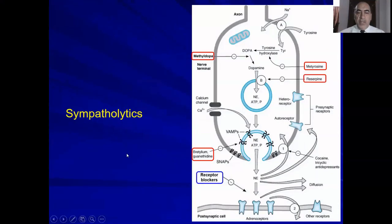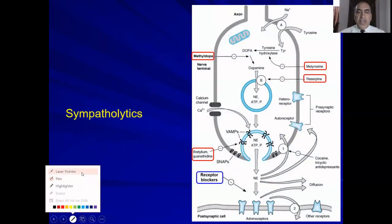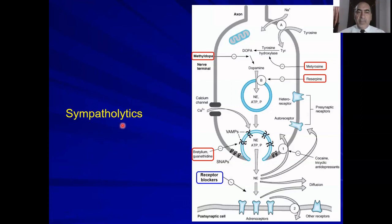Sympatholytics are those drugs that can antagonize the effect of the sympathetic nervous system. There are two classes of these drugs: drugs that inhibit noradrenergic transmission, and adrenergic receptor blockers.